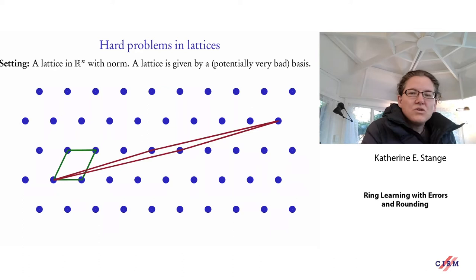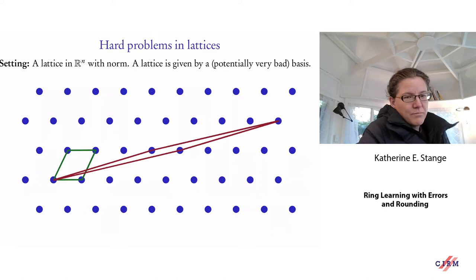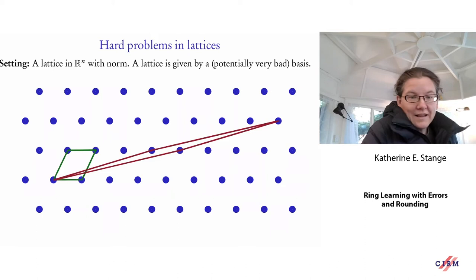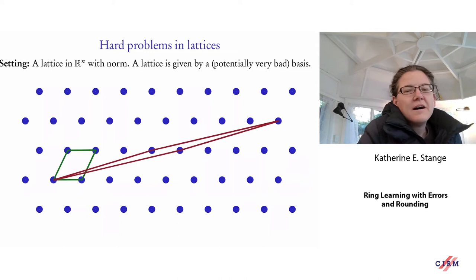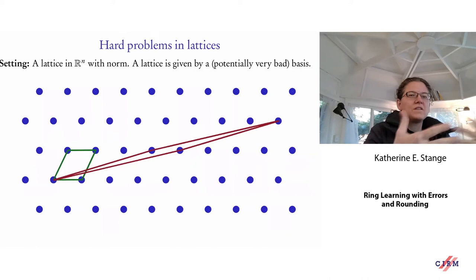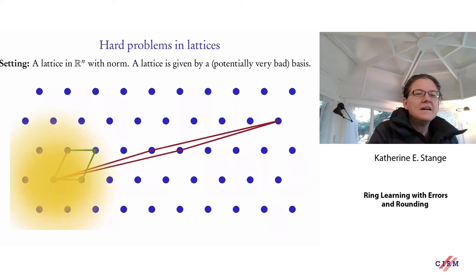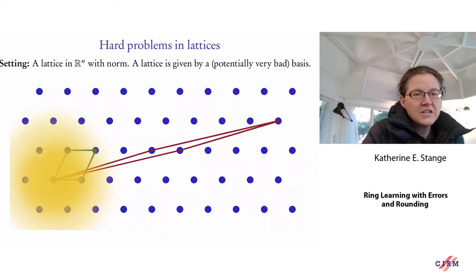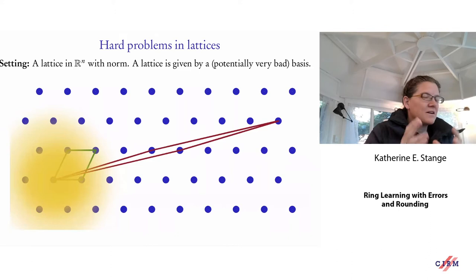When I give you a lattice I give it by listing basis elements, and I can give you a good basis or a bad basis. The green one is a good basis — it's concordant with the geometry of R^n in the sense that if you ask for short vectors in the lattice, you get them by taking short linear combinations of the basis elements. For the red one this is not at all true.